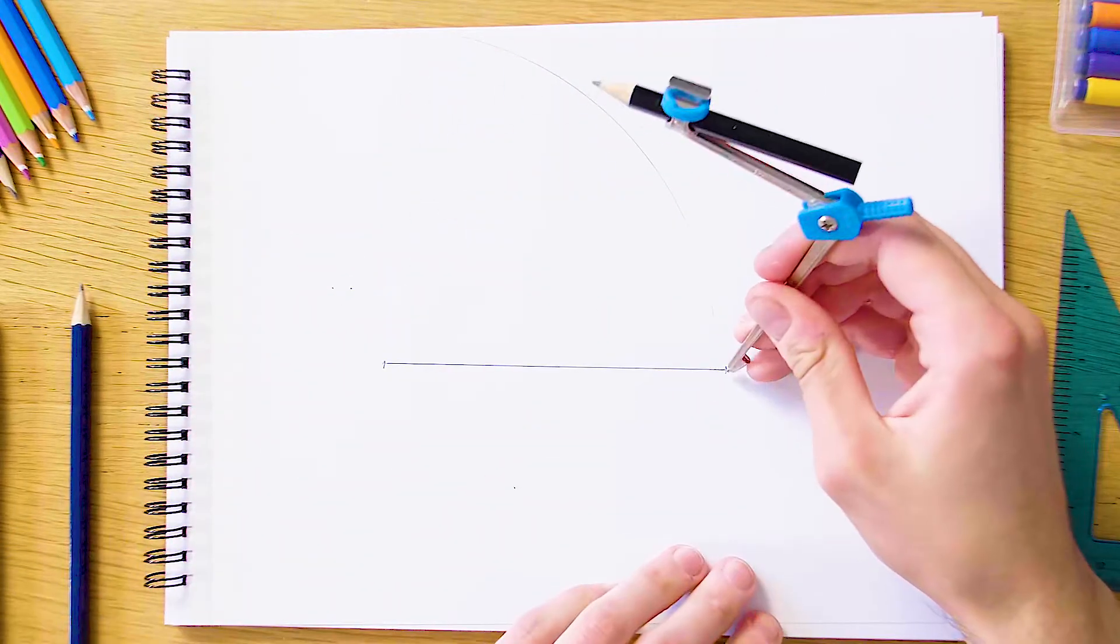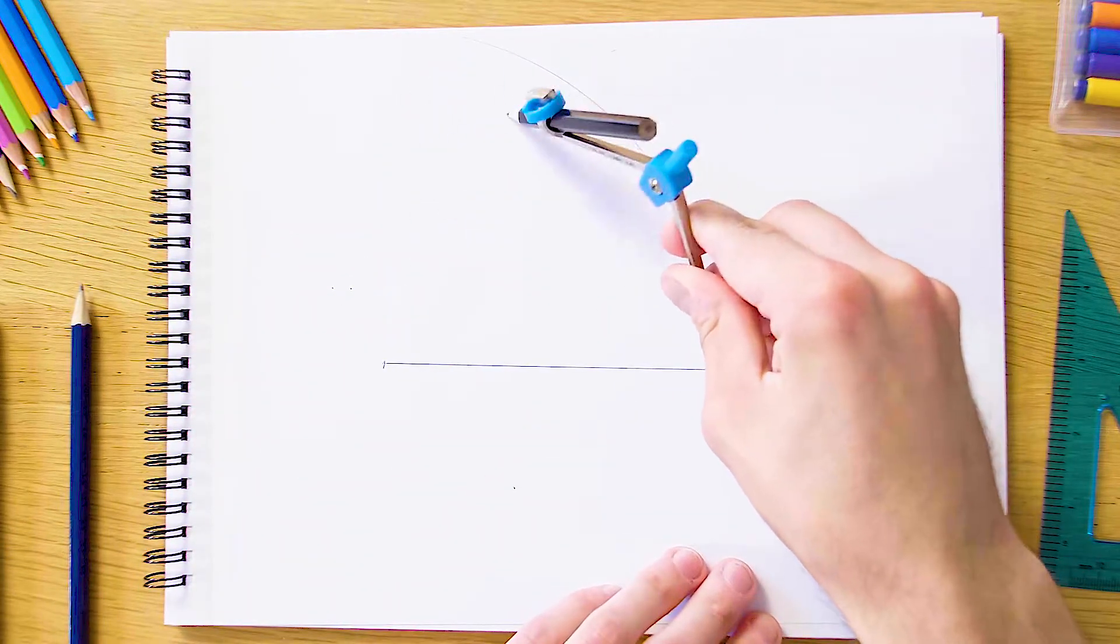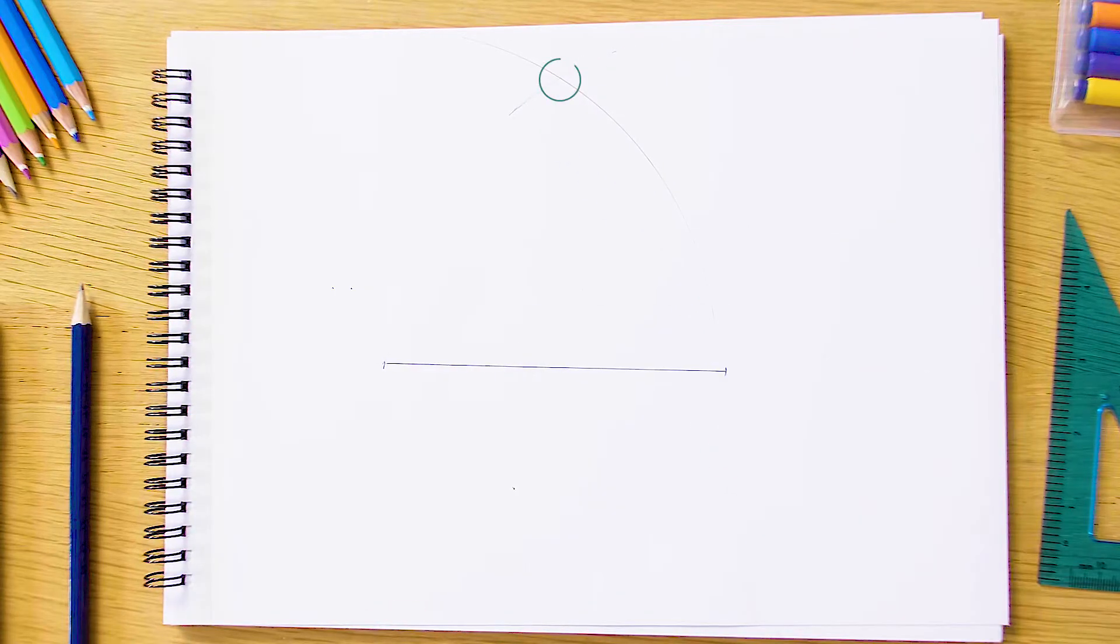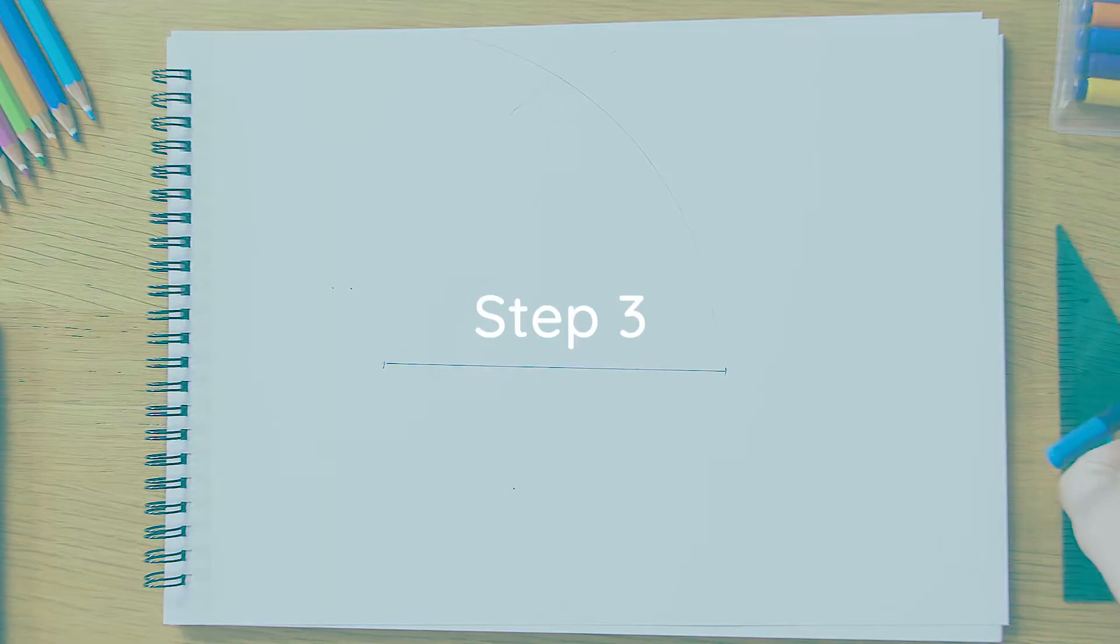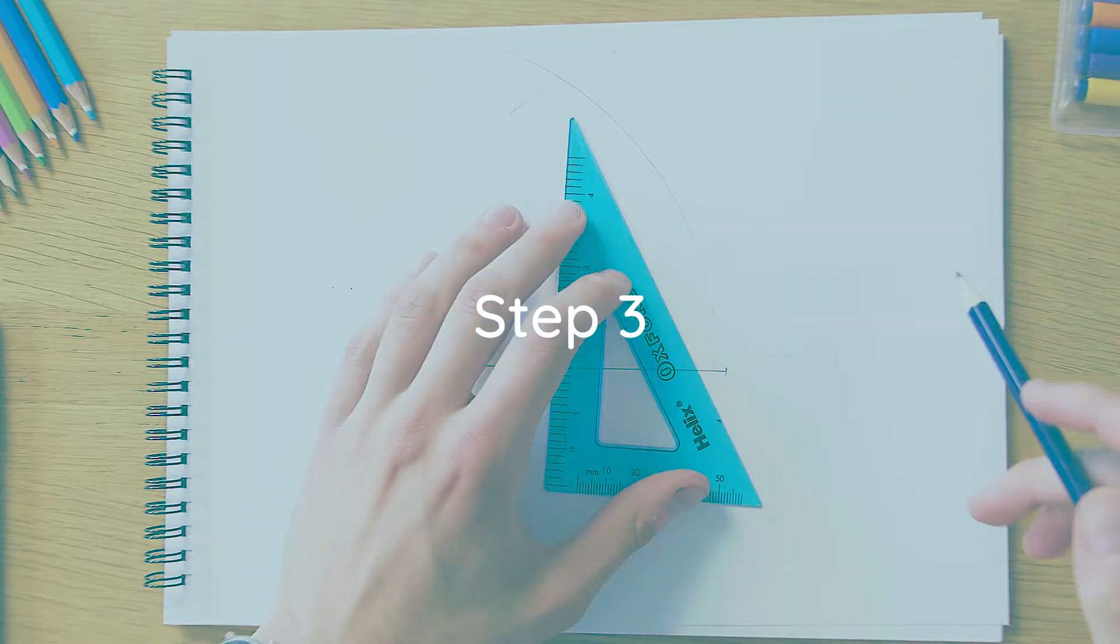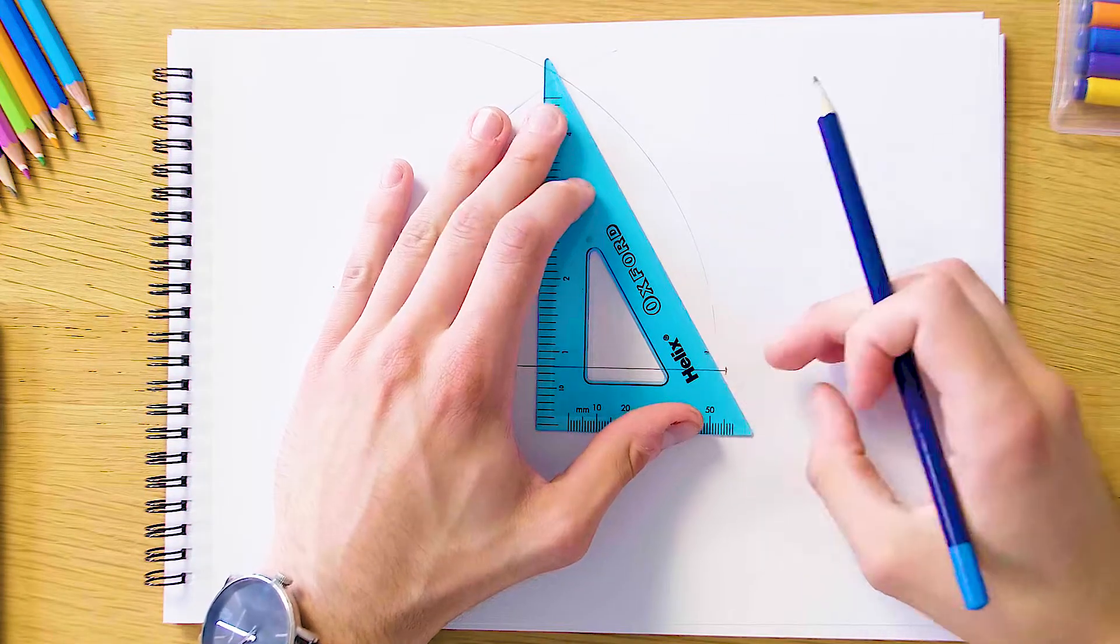And now we're just going to join this newly created intersect back then to the other two vertices. And the point of doing this is that we've basically ensured the triangle has three equal sides.